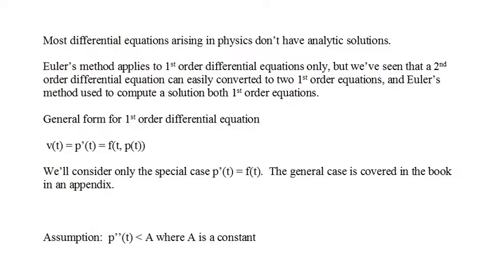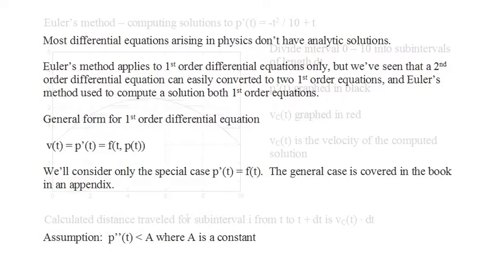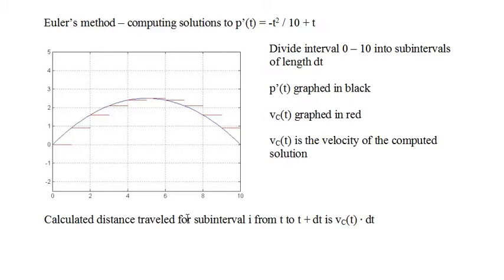In the video, we will consider only the simplest case when p prime of t is a function of t only. We assume that the acceleration of p, that is p double prime, is bounded on the interval of interest by a constant a. Let's examine how Euler's method works and we'll use p prime of t equals minus t squared divided by 10 plus t as our example velocity function.